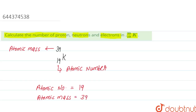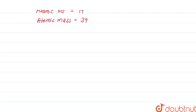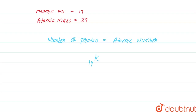The number of protons is always equal to the atomic number of an element. The number of protons equals the atomic number. We have the element K-39-19, and its atomic number is 19. So the number of protons in potassium K-39-19 equals 19.